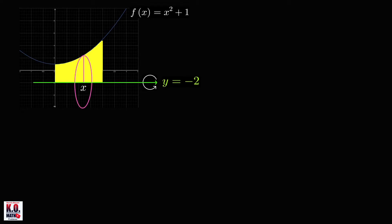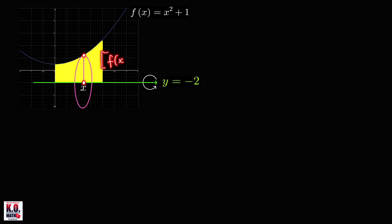Similar to the previous problem, think of this as the cross section of the solid of revolution—an infinitely thin disk or cylinder with thickness dx. The cross sectional area is pi times radius squared. The radius equals the length of the segment connecting the two boundary curves, which is the difference of the two y values: f of x minus negative 2.